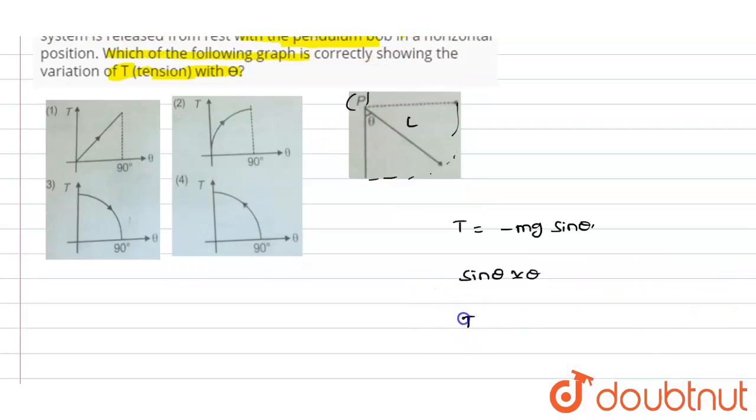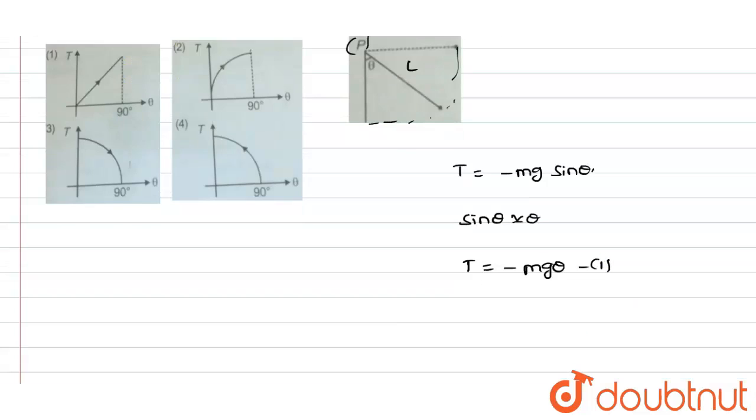Therefore the tension value can be written as tension capital T equals minus mg into theta. Let us suppose this as equation number one. Now this equation is almost same as y equals...